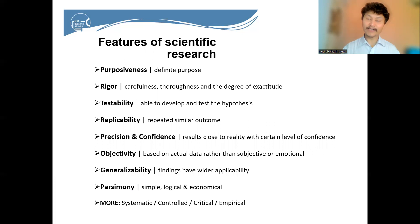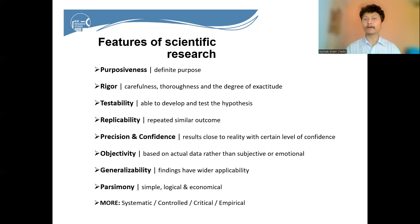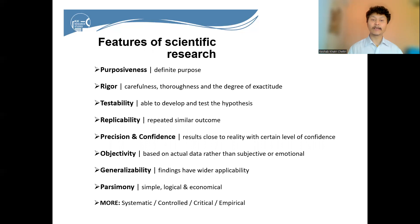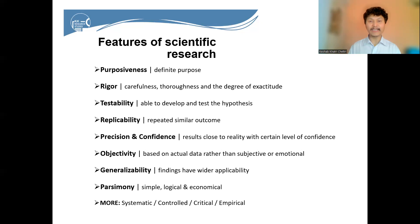Precision and confidence. Since scientific research is carried out step by step with great care and thoroughness, we as researchers are pretty sure about the precision of the results — meaning the findings will be very close to reality. We will have a certain level of confidence in saying that our results are close to reality. While performing statistical analysis, we set a confidence level, like 95% or 99% confidence, which is the interval where we can comfortably say that our findings are very close to reality.